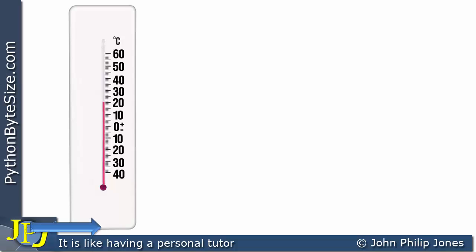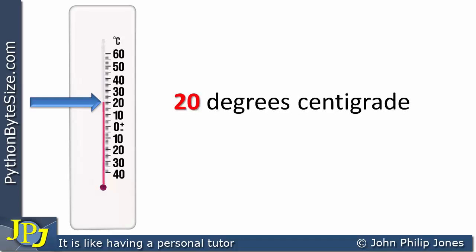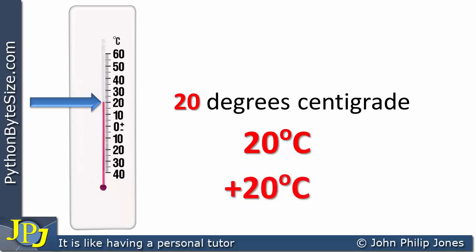If we have a look at where the mercury is at the moment, we can see it's at 20 degrees C. We can write that down as 20 degrees C using the appropriate symbols. We could also put it like this: plus 20 degrees C to emphasize the fact that it's above zero, above the freezing point.